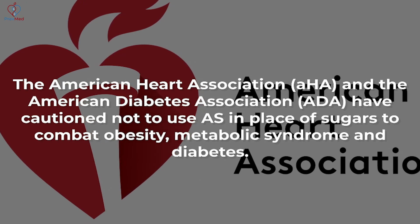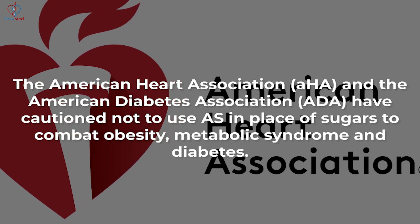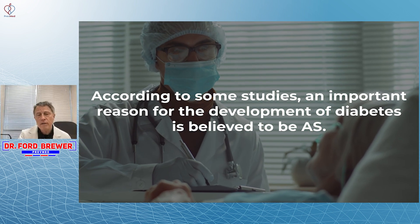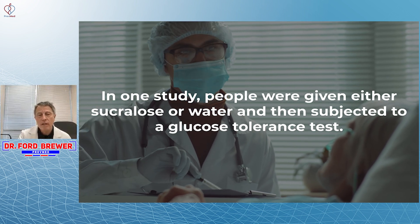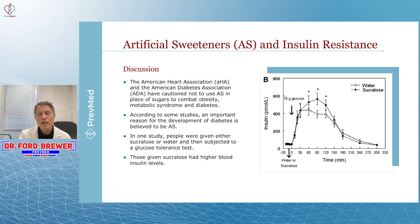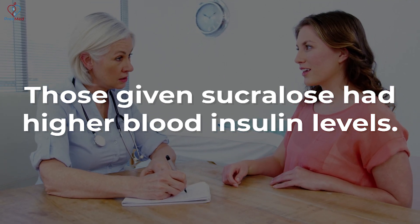The American Heart Association and the American Diabetes Association have cautioned not to use artificial sweeteners in place of sugars to combat obesity, metabolic syndrome, and diabetes — and they've done that based on studies like the one we talked about today. According to some studies, an important reason for development of diabetes is believed to be artificial sweeteners. I'm skeptical. In one study, people were given either sucralose or water and then subjected to a glucose tolerance test. That study gives me more pause for concern than any of the other studies I've seen — those given sucralose had higher blood insulin levels.